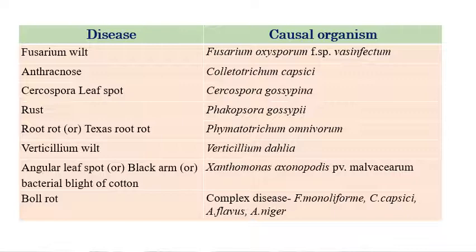Coming to the list of important diseases in cotton: the first one is Fusarium wilt, which is caused by Fusarium oxysporum f. sp. vasinfectum. Anthracnose, which is caused by Colletotrichum capsici. Cercospora leaf spot, which is caused by Cercospora gossypina. And Rust, which is caused by Phakopsora gossypii. And Root Rot, otherwise called Texas Root Rot, which is caused by Phymatotrichum omnivorum.